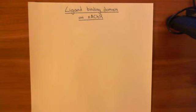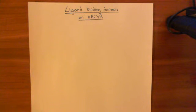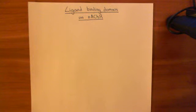We'll then talk about the actual binding site, about how it's got an aromatic nest made up of tryptophan, phenylalanine, and tyrosine residues. We'll then talk about the cation-pi interactions, and how the acetylcholine binds to the acetylcholine binding protein through cation-pi interactions. Finally, we'll talk about an experiment by which you can show how important cation-pi interactions between aromatic residues in the aromatic nest and the acetylcholine molecule are.